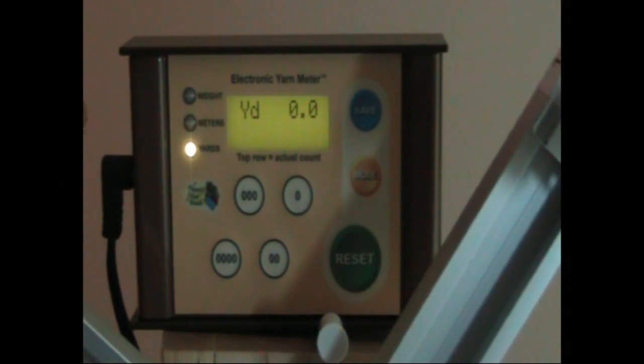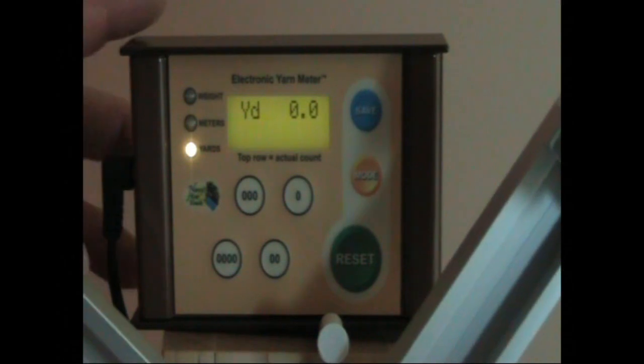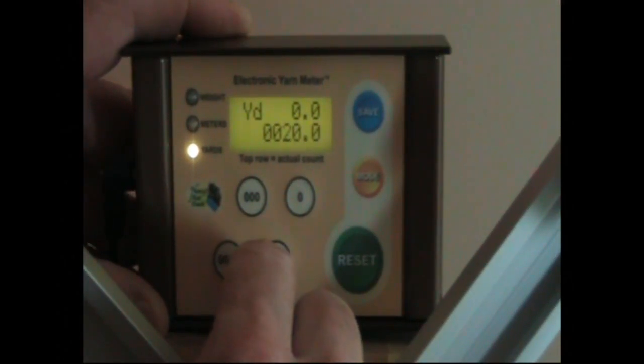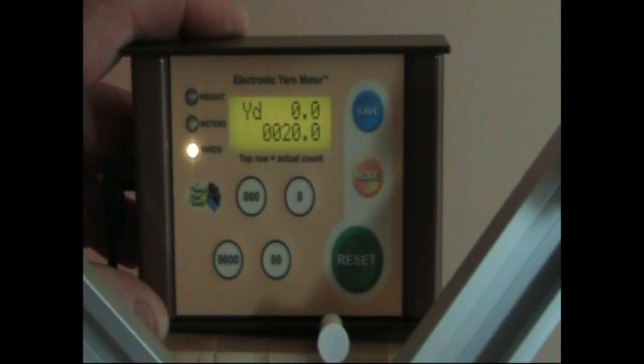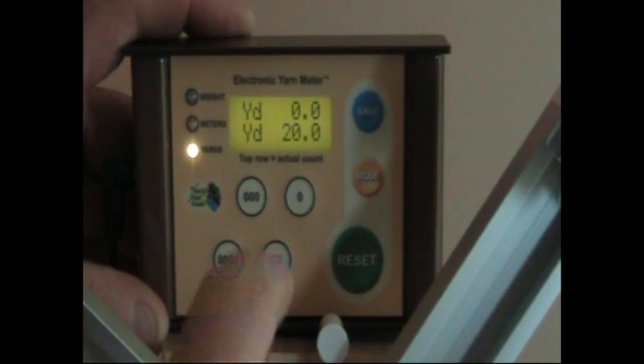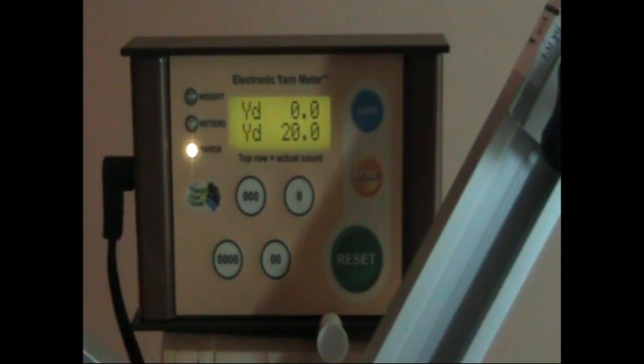Now in this case we're going to enter a preset number. A preset number is a number that you're trying to count up to. So in this case I'm going to enter 20 yards and it's still using the number of inches that we entered in the previous example. So I hit save. That puts our target at 20, our preset number at 20, and the actual at 0.